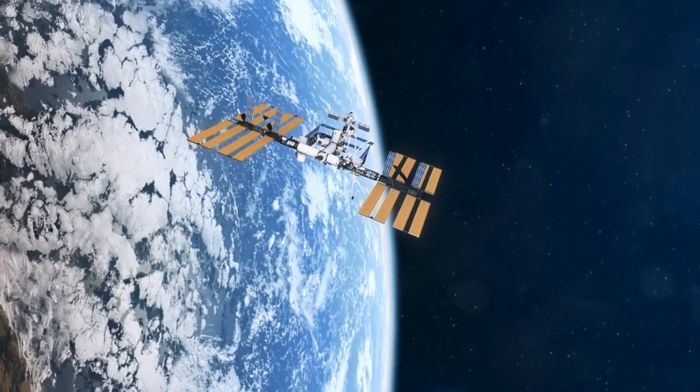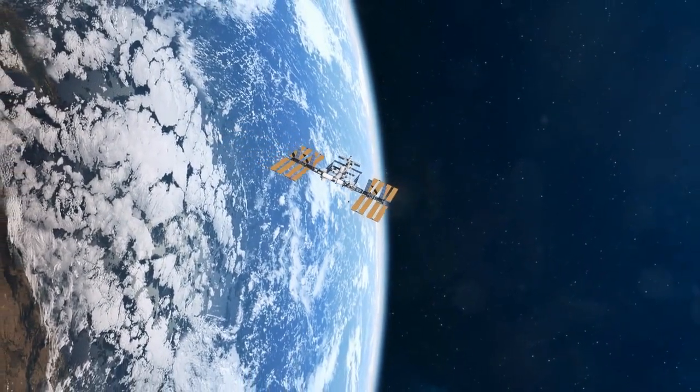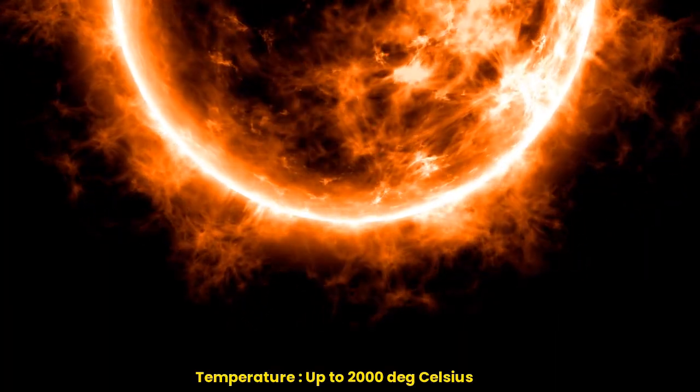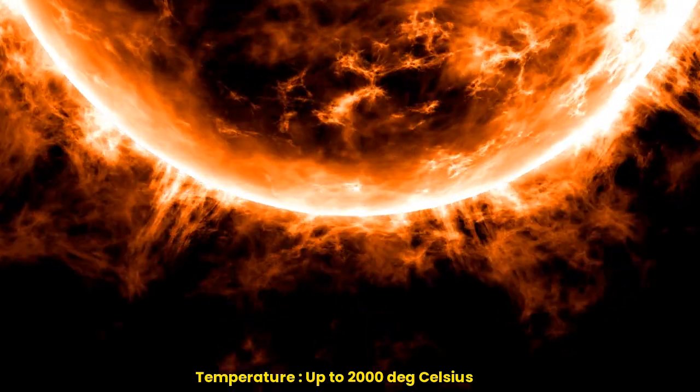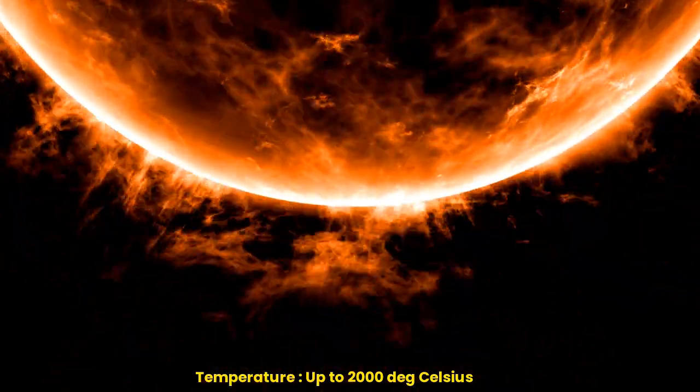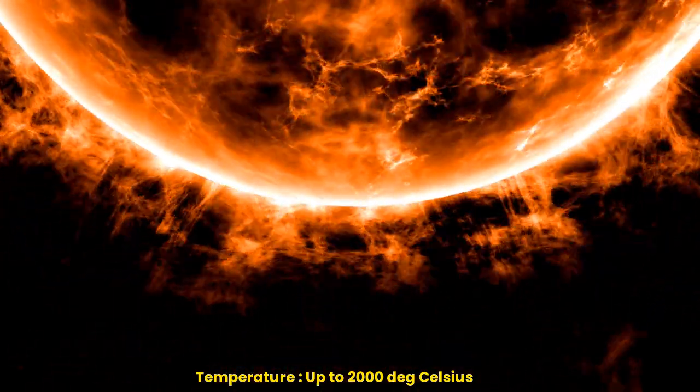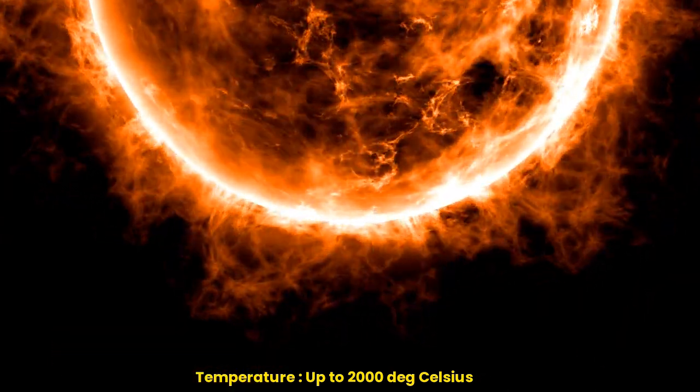This is the layer where the International Space Station orbits the Earth. The air in the thermosphere is very thin, and it can get extremely hot, reaching as high as 2,000 degrees Celsius near the top, because it's bombarded by solar radiation.